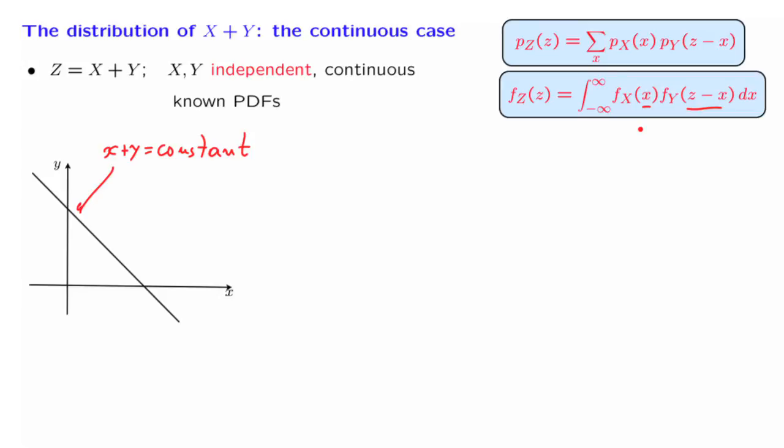We will use the following trick. We will first condition on the random variable X taking on a specific value. If we do this conditioning, then the random variable Z becomes little x plus Y. And to make the argument more transparent, we're going to look first at a special case where little x is, let's say, the number 3, in which case our random variable Z is equal to Y plus 3.